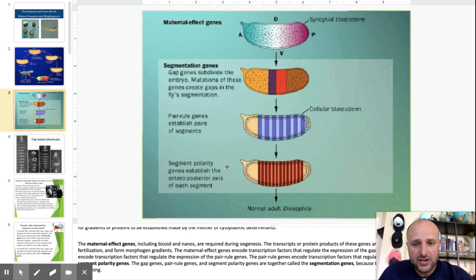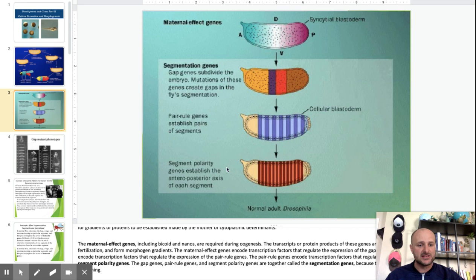And you've got segment polarity genes, which begin to establish the anterior-posterior axis of each segment. So, you've got these maternal effect genes, and then within that, you have these segmentation genes, the gap genes, the pair rule genes, and the segment polarity genes.